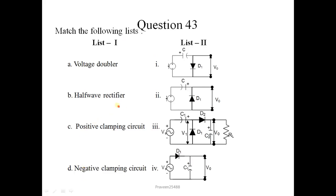Question number 43: Match the following list. In list 2, you see the circuit diagram is given. The voltage doubler circuit diagram is this one. For half wave rectifier, here is the diagram. Positive clamping circuit is this one. And for negative clamping circuit, this one is for negative clamping circuit. Correct option is 3, 4, 1, 2. Option 2 is the correct option.